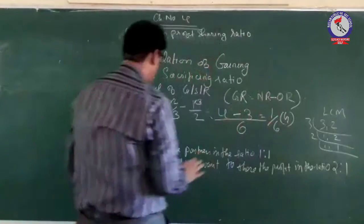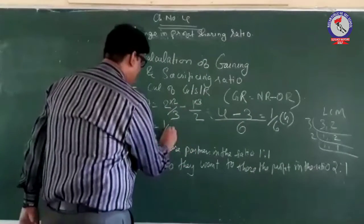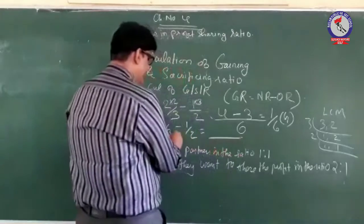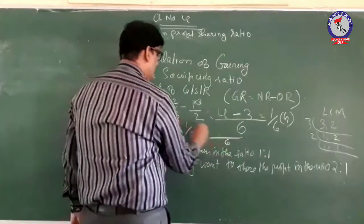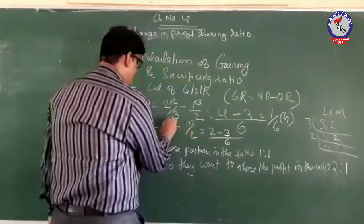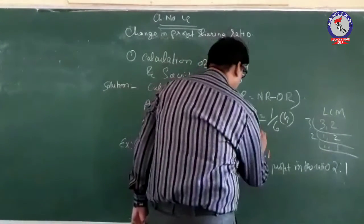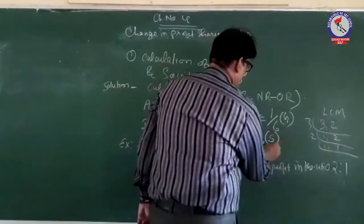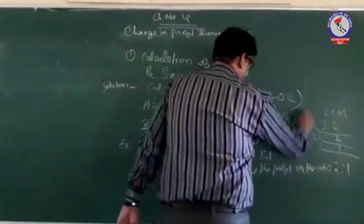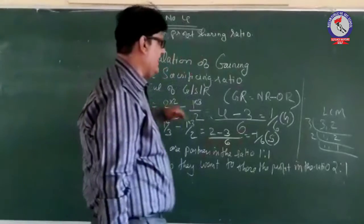For partner B, the new ratio is 1/3 minus old ratio 1/2. Converting to a common denominator of 6: 2/6 minus 3/6 = minus 1/6. So we have observed that B has a sacrificing ratio of 1/6 and A has gained 1/6.